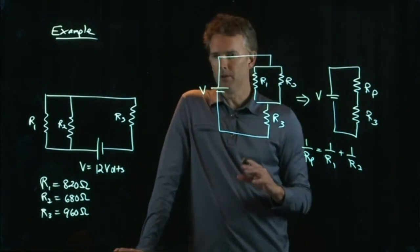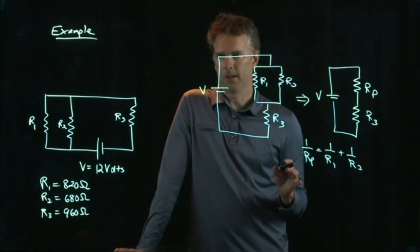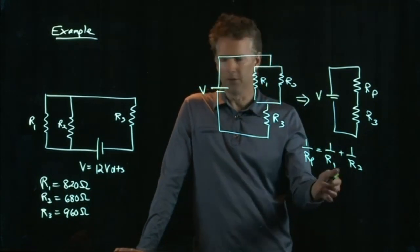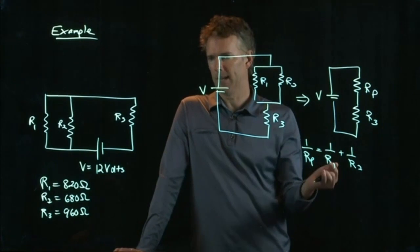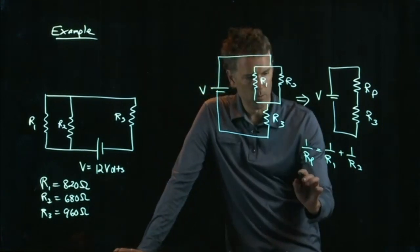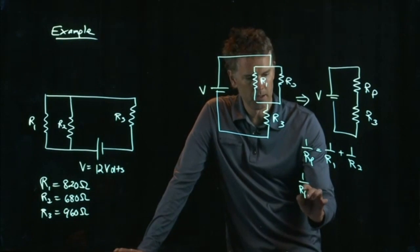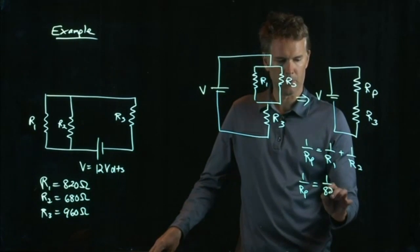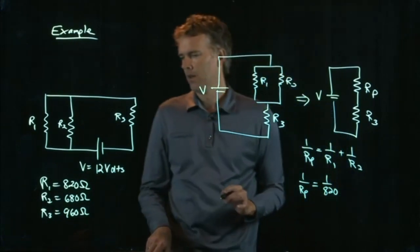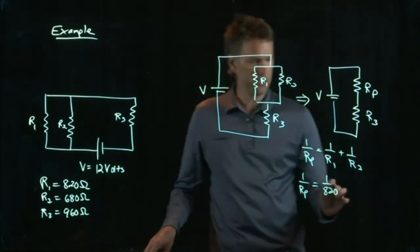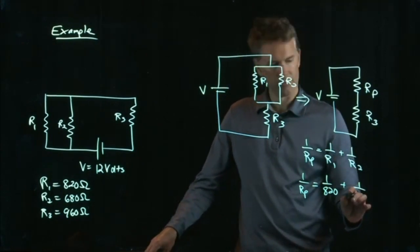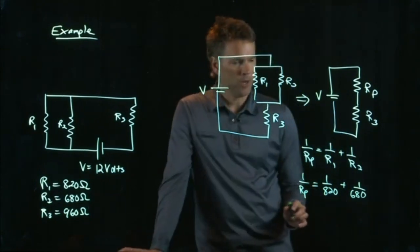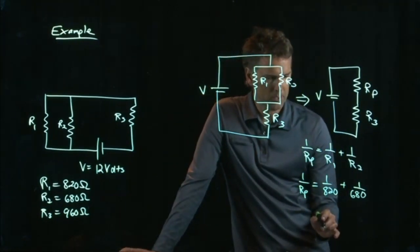And now, at this point, you could calculate Rp, right? Austin was asking about writing this in terms of common denominators. You could also just plug in those numbers and calculate Rp. So, why don't we do that? 1 over Rp equals 1 over R1, which is 820 ohms, plus 1 over R2, which is 680 ohms. And why don't you guys plug those into your calculator and tell me what you get.